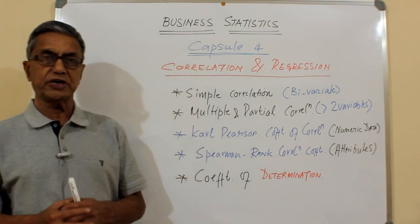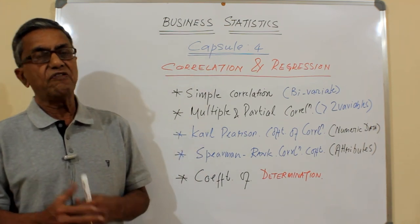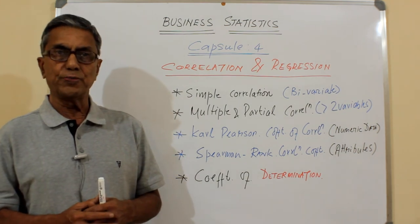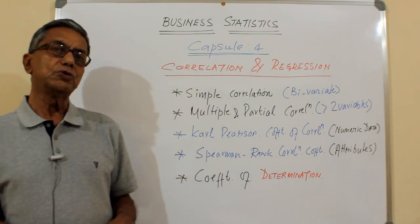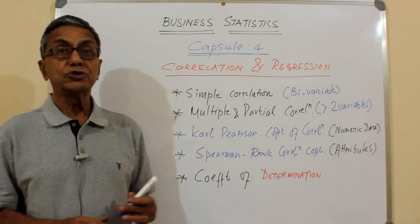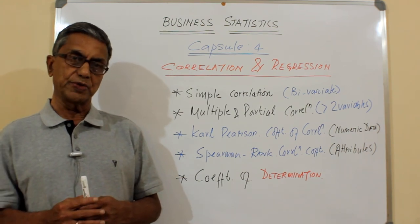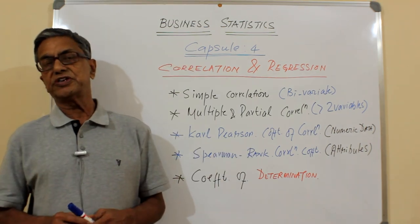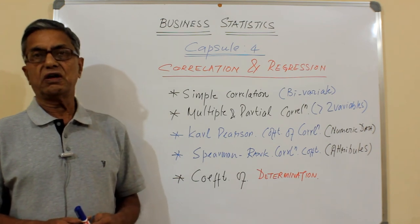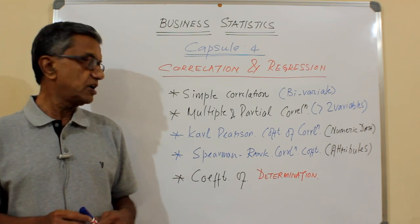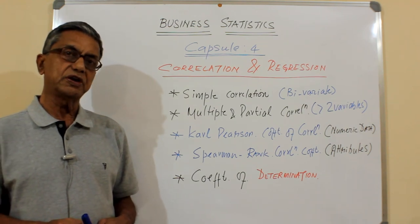Unlike in social sciences where a moderate correlation might be sufficient to take certain decisions, in clinical fields a very high level of coefficient of determination is required because most of the data should point toward the expected correlation. It depends entirely on the situation and the significance of the decision to be made. We will now move on to a PowerPoint presentation to see various aspects of correlation, look at examples, understand how correlation coefficients are calculated, and how they can be used for decision-making.